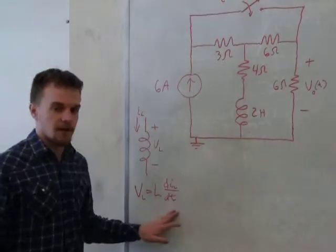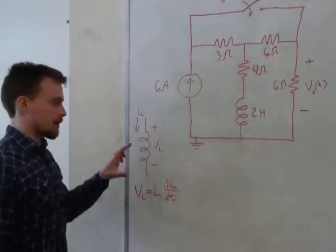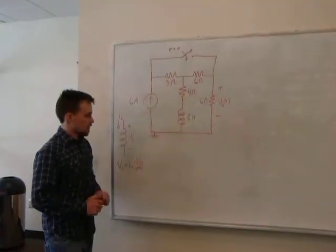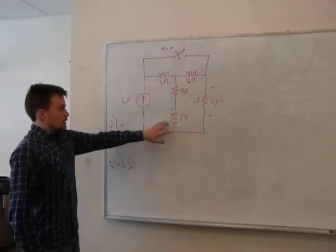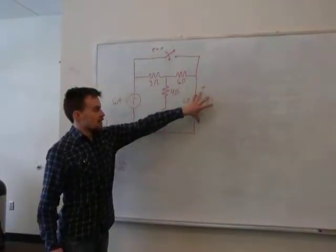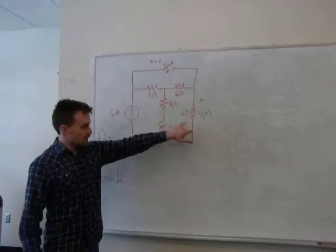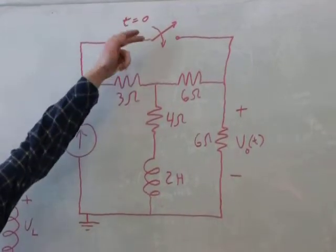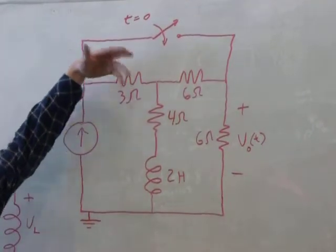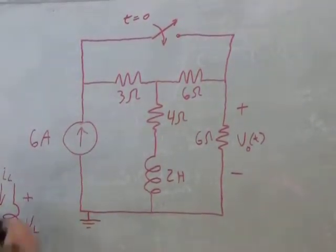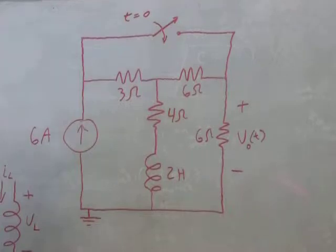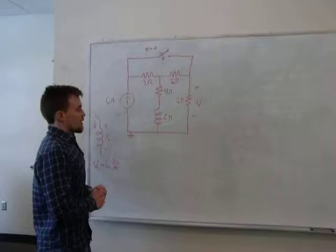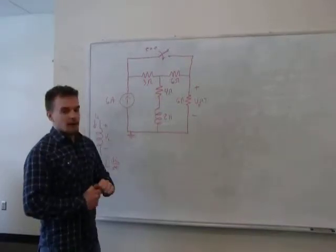If the current changes, then a voltage has to appear across the inductor. We will solve this circuit for the voltage across this resistor as a function of time. There's a switch up here that closes at time equals zero, and we can assume that it's always been open up until time equals zero. We're going to end up with a differential equation, so we're going to want some initial conditions.